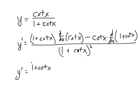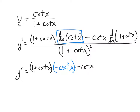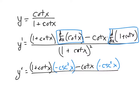So 1 plus cotangent X — keeping that part the same — and now I'm going to look at what the derivative of cotangent X is. Hopefully remembering that it's negative since it's a negative cosecant squared of X. Then minus cotangent X, not changing that, and then the derivative of 1 is just 0, so that goes away. The derivative of cotangent X is again negative cosecant squared X. The denominator — like I said — just rewrite it so you don't forget: (1 plus cotangent X) quantity squared.